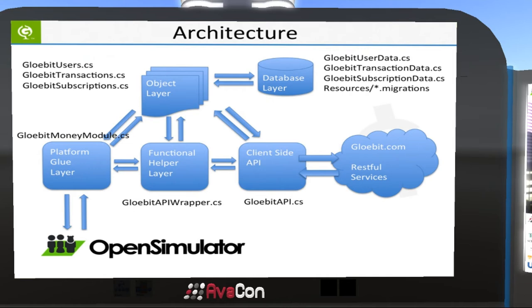This slide gives you an idea of what those classes are in the repository. If you're looking to modify the C# API, you'll be working with the GlobitAPIWrapper. If you're looking to improve the object or database layers, you have those classes. If you're looking to add OpenSim functionality — say, group join fees, which people have requested — most of that will happen within the GlobitMoneyModule. If you're going to add or change configuration values for how an OpenSim world interacts with Glowbit, that also happens primarily in the GlobitMoneyModule.